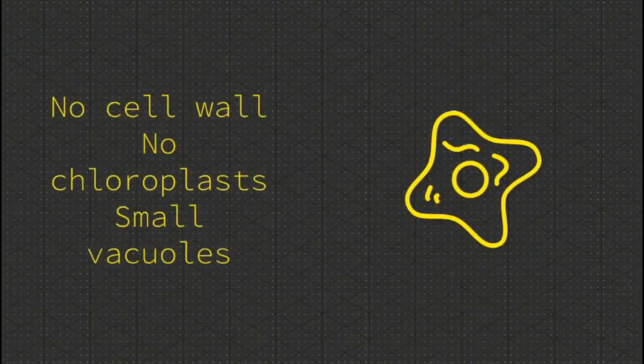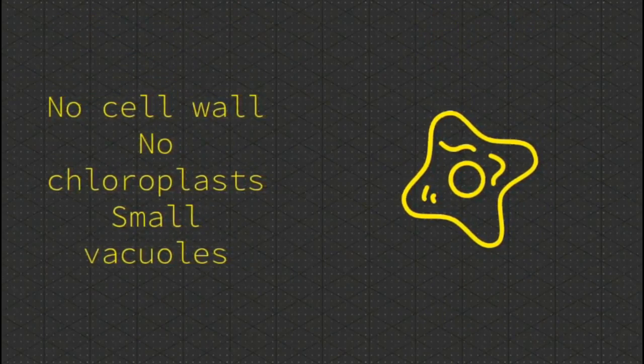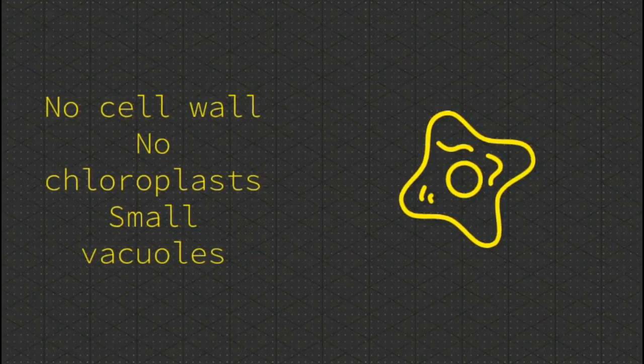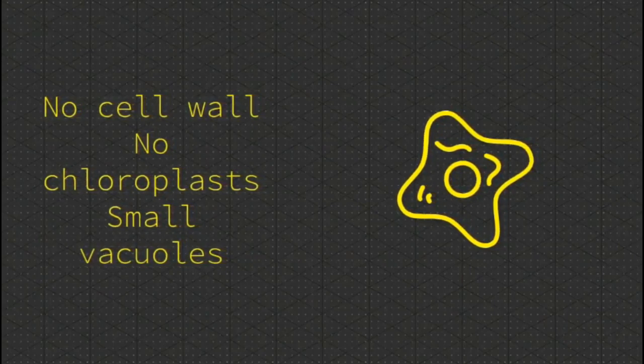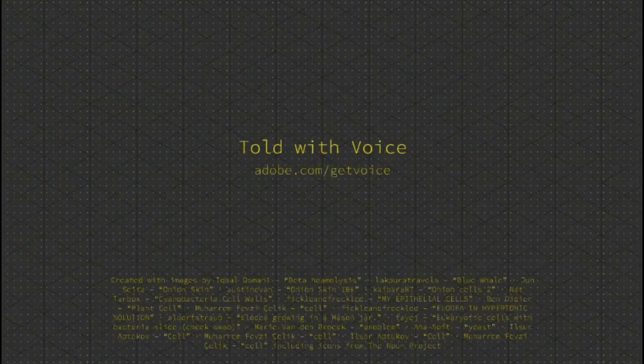Some of the differences that animal cells have is that animal cells have no cell wall, no chloroplasts, and they have lots of small vacuoles.